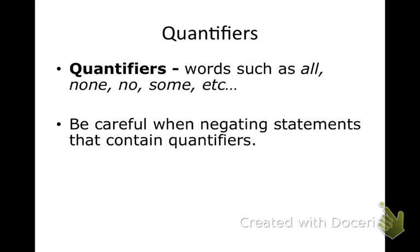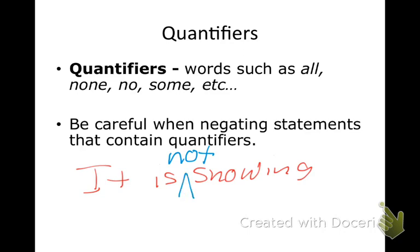So, quantifiers. When we negate a statement, it's sometimes very straightforward — if we want to negate 'it is snowing,' we simply insert the word NOT. But this simple statement doesn't have any quantifiers. Quantifiers are words like ALL, NONE, NO, or SOME — they give you a quantity; you're talking about a group of things. You have to be careful when you negate those — you can't just simply throw a NOT in.